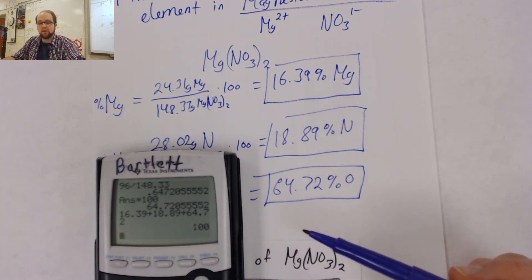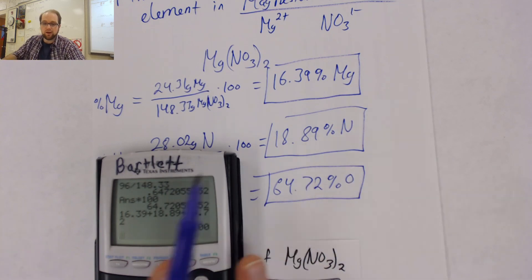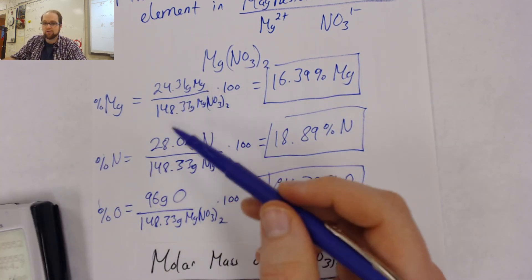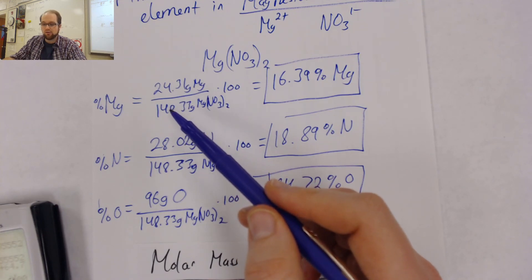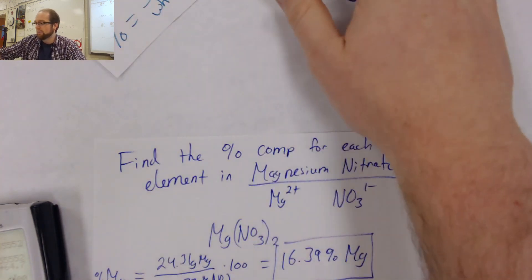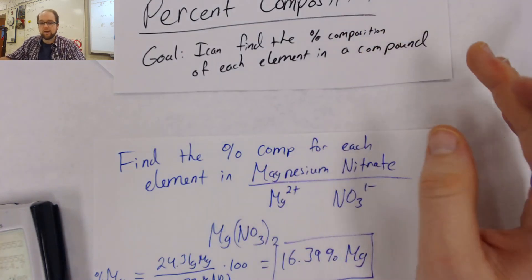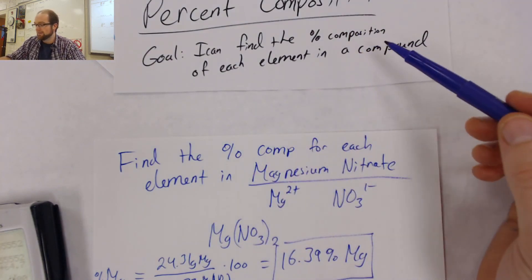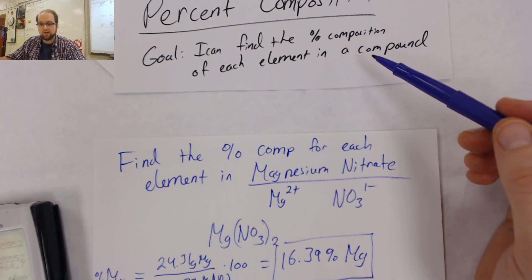That is our breakdown for how we solve these types of problems. They're not super crazy. We're just making sure you understand how to set up your percents to get the correct part over the whole. Hopefully, we should be able to reach our goal right now of finding the percent composition of each element in a compound. If you have any questions, please don't hesitate to ask. Send me an email. Hope you guys have a great rest of your day.